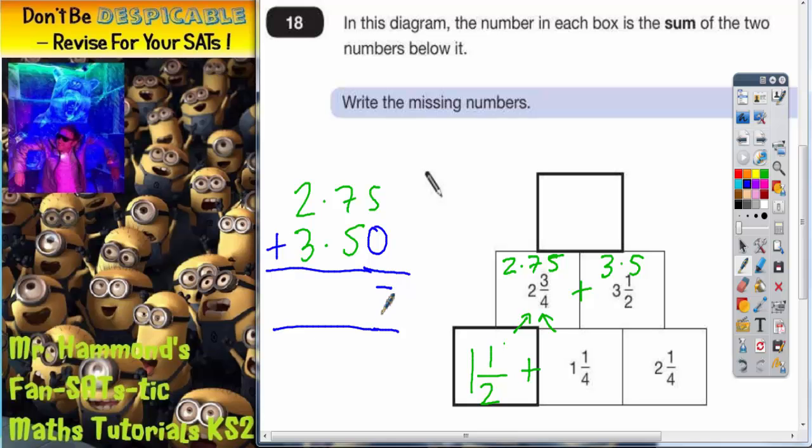5 plus 0 is 5, 7 plus 5 is 12, put the 2 in, carry the 1, 2 plus 3 is 5, plus the 1, carry the 1, 2 plus 3 is 5, plus the 1, carry the 6. So we've got 6.25.